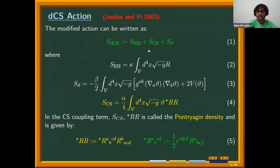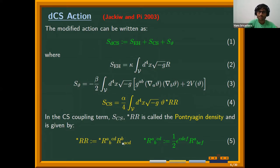The DCS action can be written, in the absence of external matter, with one piece being the standard Einstein-Hilbert action, then S_theta which is just the scalar field Lagrangian, and the part that distinguishes DCS from GR is the S_CS part, where the scalar field is coupled to the Pontryagin density r* r — a contraction of the Riemann tensor with the Levi-Civita tensor. The Chern-Simons coupling parameter alpha describes how much deviation from GR there is. When alpha equals zero, the theory is GR; the stronger alpha gets, the more deviation from GR.